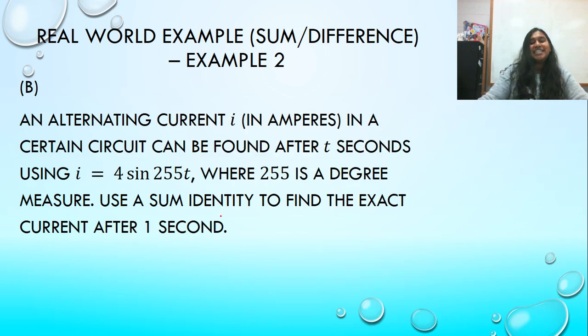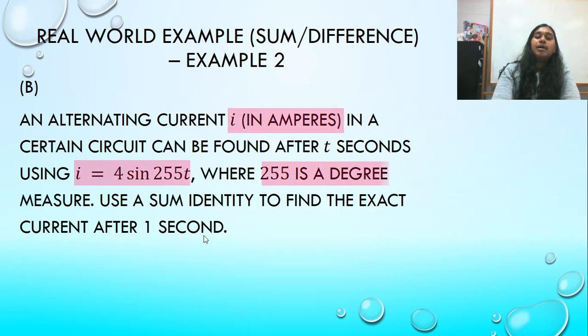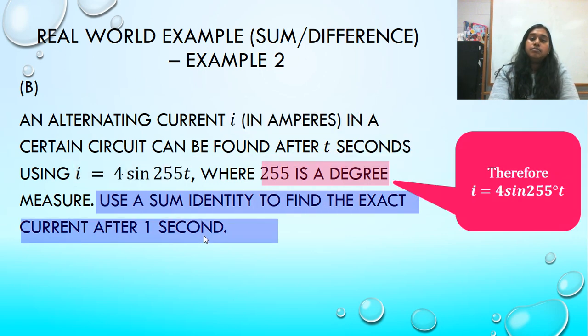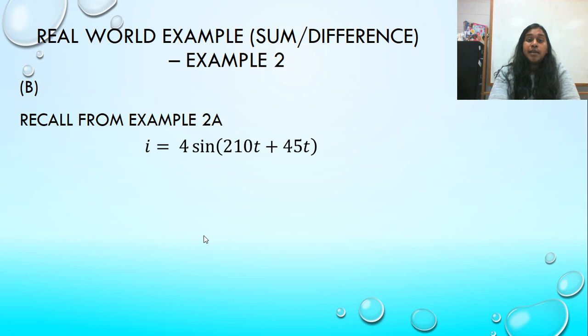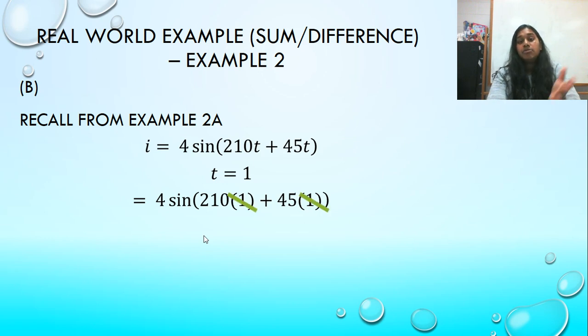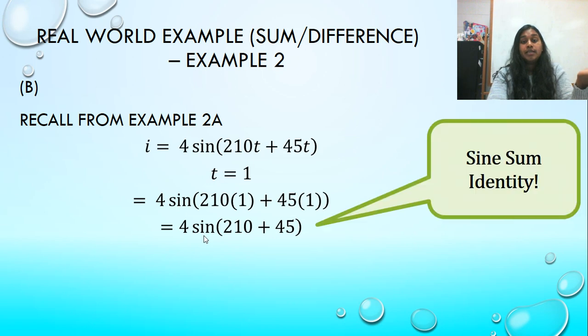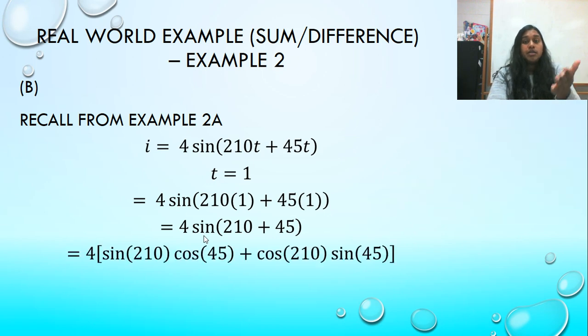But what if it wanted me to use that identity to find it after just one second? So I use the same information. I create my sum identity. Well, we already did that in example 2A. And now I plug in for t equals 1. Well, 210 times 1 and 45 times 1 happens to be just itself. So we got nice and lucky. That becomes the sum identity. So I split them up.